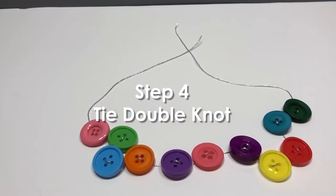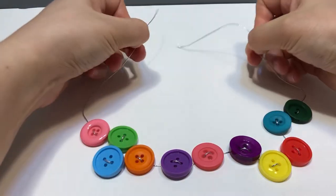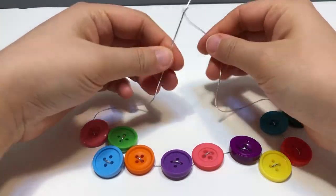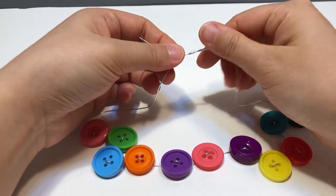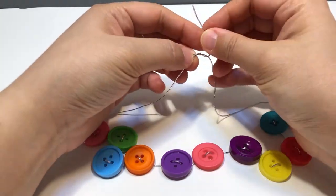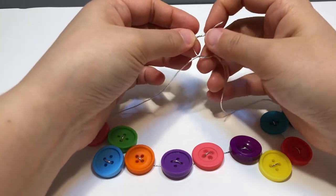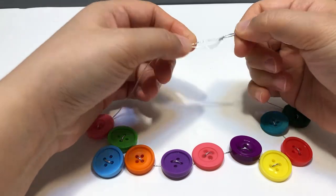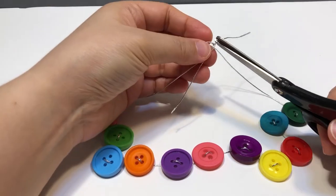Step 4: Tie a double knot. With all your buttons in place we can tie off the elastic cord. Grab the two ends and wrap them around each other like this. Then grab the two ends again and wrap them around and carefully pull them tight. Then trim.